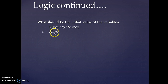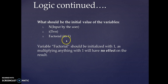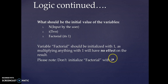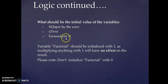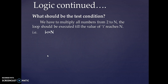We are skipping the value 1 and taking 2 — this saves time. Finally, factorial is initialized with 1. Be careful not to initialize it with 0, as that will result in no answer. We initialize it with 1 because multiplying any number by 1 has no effect on the result. The test condition: we have to multiply all numbers from 2 to n, so the loop should execute while i is less than or equal to n.